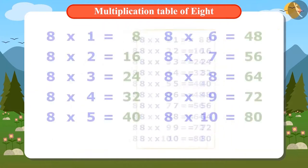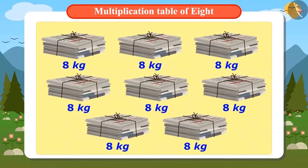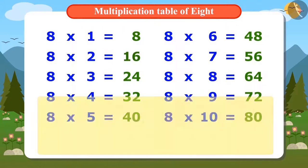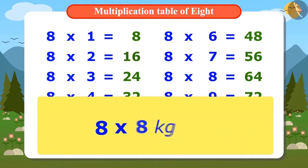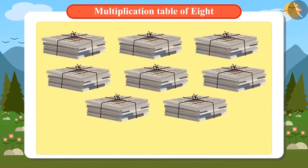Vandana has written down the entire multiplication table of 8. You can check whether the table you wrote matches. Now, using this table, Vandana can calculate the weight of 8 bundles of newspapers where each bundle weighs 8 kilograms. The answer is 8 multiplied by 8, which is 64 kilograms. These 8 bundles weighed 64 kilos in total.